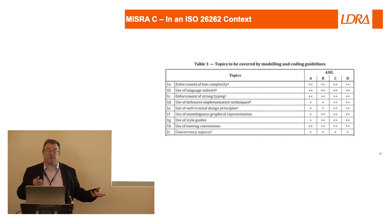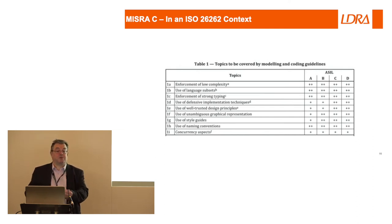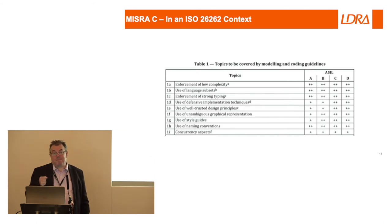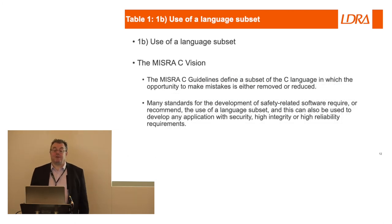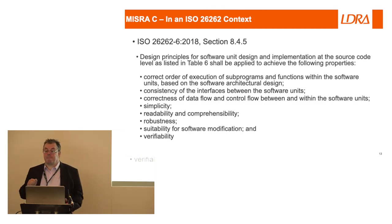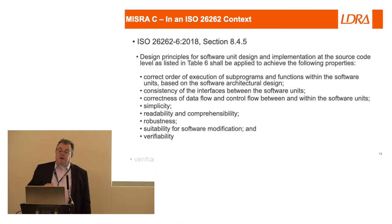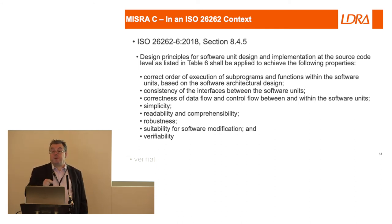The table referred to talks about things we ought to be doing in our coding standards. In many ways this is motherhood and apple pie — hopefully we're doing these anyway; we shouldn't need a standard to tell us to have less complex code, use subsets, et cetera. But unfortunately the evidence is we do need to tell people. User language subset — that's what MISRA C is, pure and simple. It's a subset that tries to stop all the rubbish in C that you could do that you really don't want to.